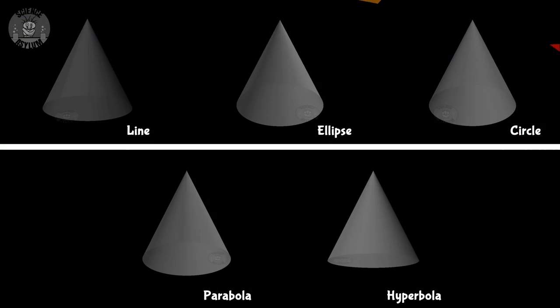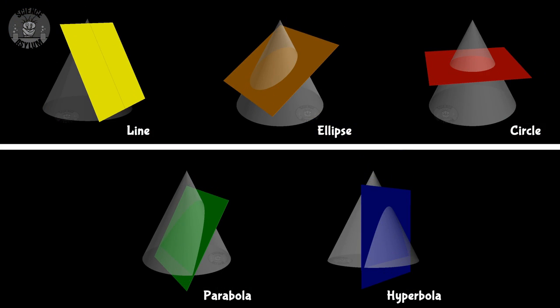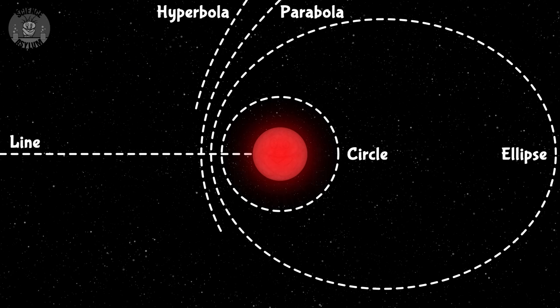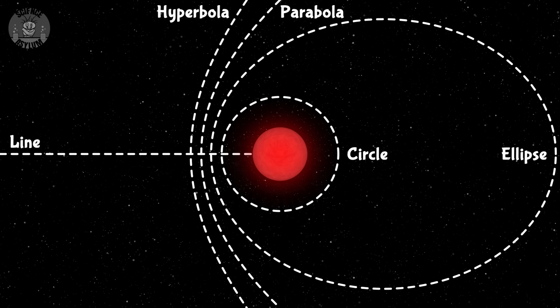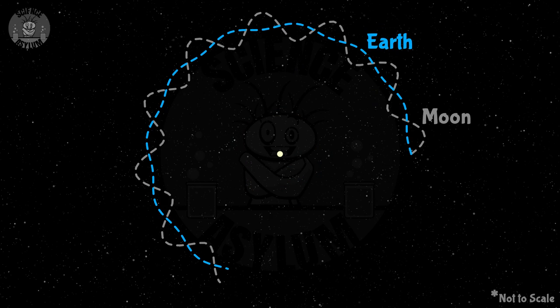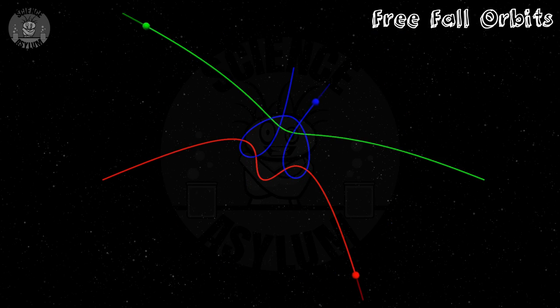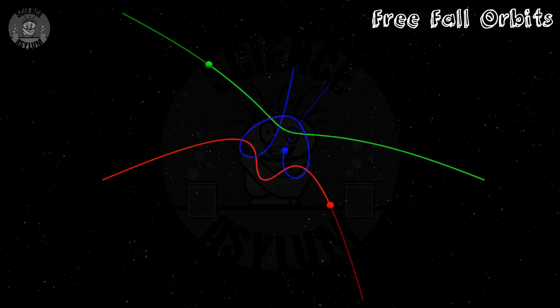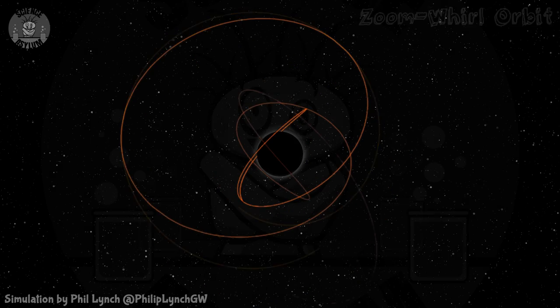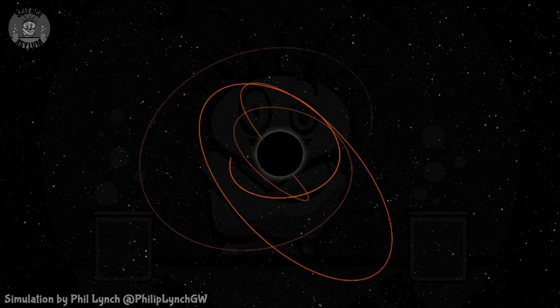How weird can orbits get? Pretty weird actually. We like to think of orbits as simple conic sections — circles, ellipses, parabolas, or hyperbolas — but that's only approximately true. Those shapes can precess, they could have some waviness to them, they might look kind of like freefall, they could zoom and whirl like an orbit around a black hole, or they might even do whatever this is. It all depends on how accurate you want to be and how extreme you want to get.